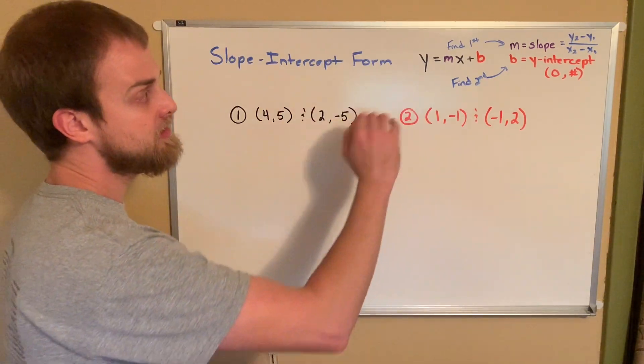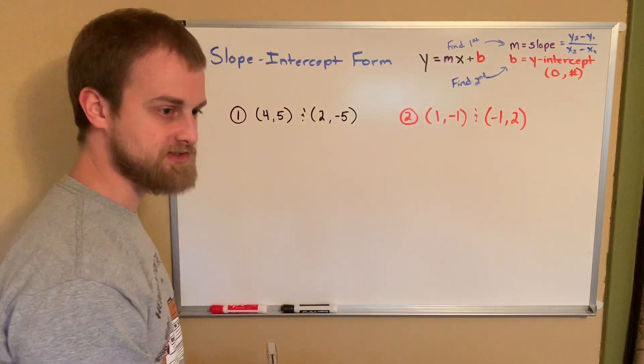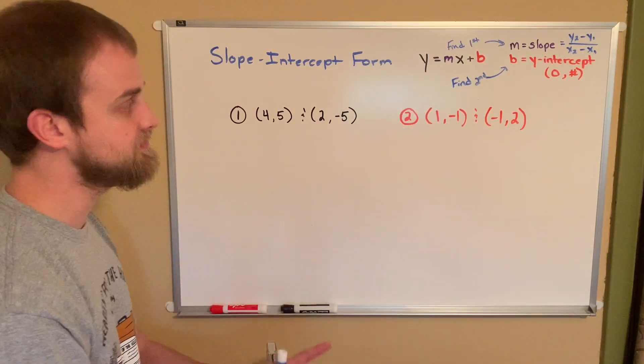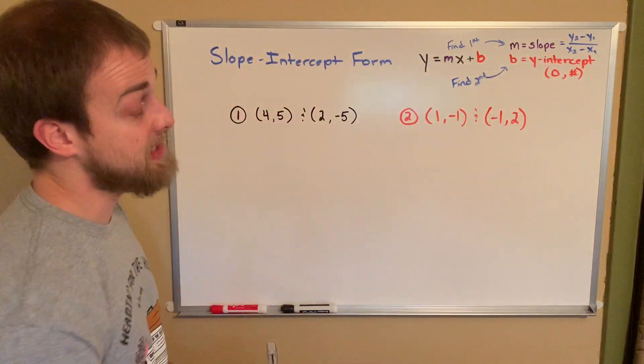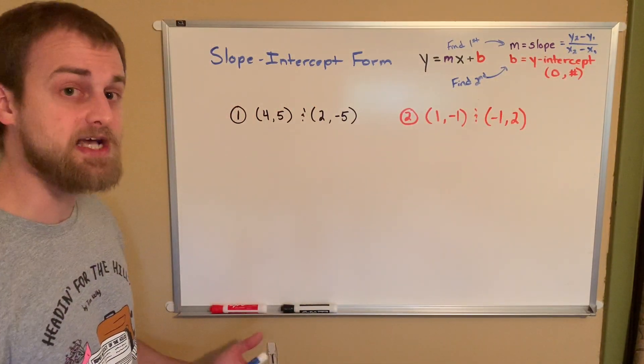And if you look, they don't really give us that. So we have to find that kind of on our own and then build our equation from it. The guidelines for today is I'm going to want us to find the slope first and it'll make things work out a little easier towards the end.